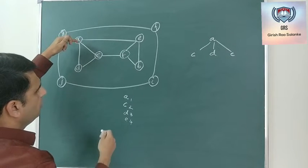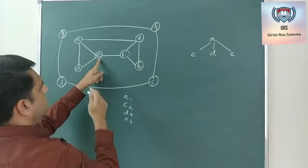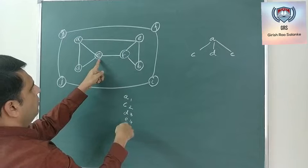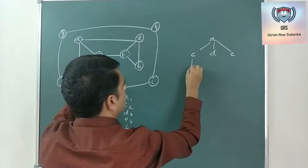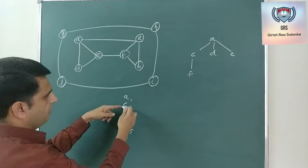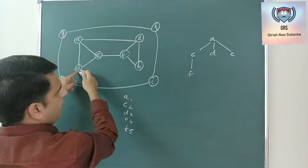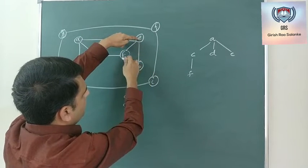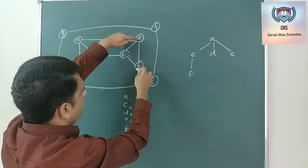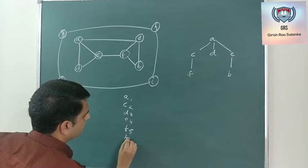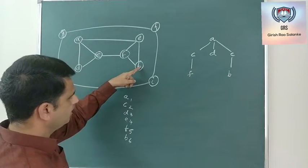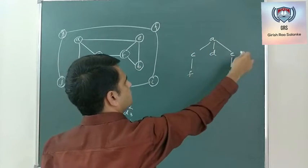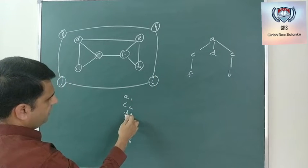In the queue, the second vertex is C. Exploring the neighbors of C which are not visited: neighbors of C are A, D, and F. A and D are already in the queue, so the remaining unvisited neighbor is F — F is the fifth node. After C, the next vertex is D; its neighbors A and C are already in the queue, so D gets processed. Next is E; its neighbors are F and B. F is already visited, so B is added as the sixth node, B6. Neighbors of B are F and E, which are already in the queue. The BFS traversal for the first component is A, C, D, E, F, B.